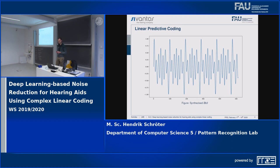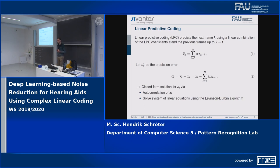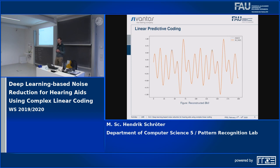To address this, I want to first introduce linear predictive coding. Linear predictive coding provides a method to model harmonic and periodic signals. Here we see a synthesis signal, and LPC tries to predict the next frame of the signal given a linear combination of order n of the previous frames and a coefficient a. We can compute ideal coefficients a by minimizing the error between the predicted signal and the real signal and solving an equation system, giving us a closed-form solution.